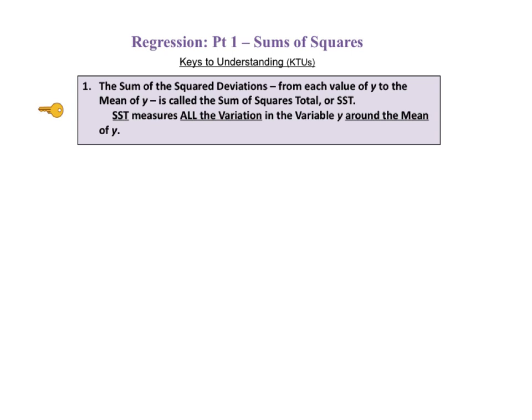The first key to understanding tells us that the sum of the squared deviations from each value of y to the mean of y is called the sum of squares total, or SST. SST measures all the variation in the variable y around the mean of y.